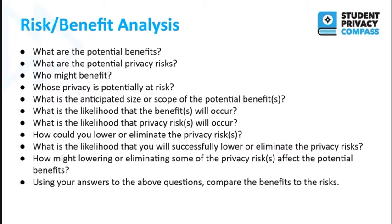So we're back to this checklist now, and hopefully it's a little bit less intimidating. What are the benefits? What are the risks? Who might benefit? Whose privacy is at risk? What is the anticipated size or scope of the benefits? What is the likelihood that either the benefits or the risks will occur? How do you lower or eliminate some of those risks? What is the likelihood that you'll successfully lower or eliminate the risks? How might lowering or eliminating privacy risks affect the benefit? For example, if you collect less data, maybe that also means that you get a lower benefit. And then using your answers, compare the benefits to the risk.